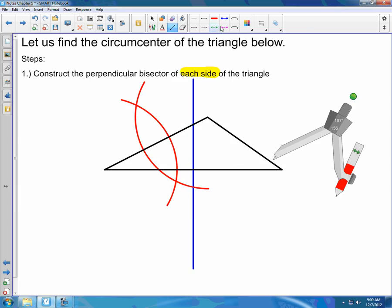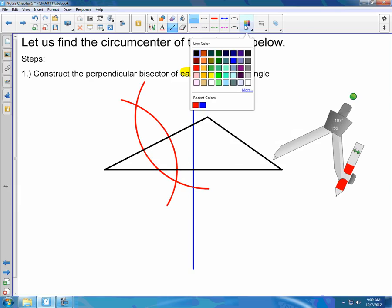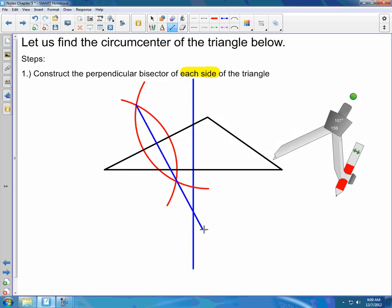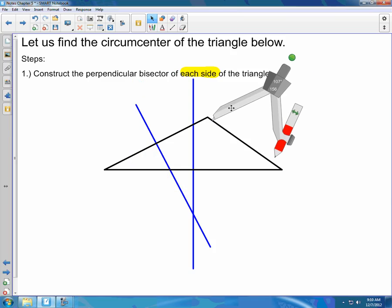Connect those two intersection points. You might want to extend a little further so that it crosses your first line. Okay, so again, after each one, you're going to want to clean up your picture so that way the arcs don't confuse you. Going to the third side now.